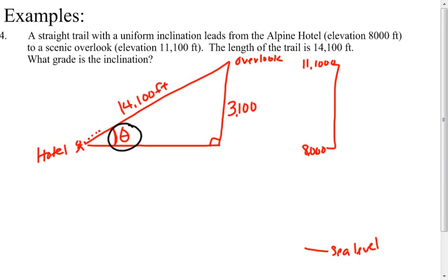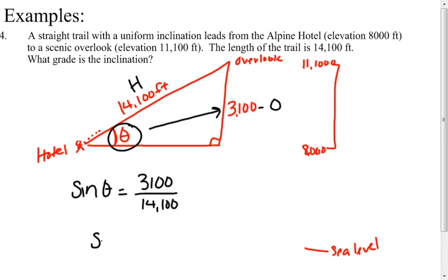You're missing the angle and need to pick two sides you already know. From this angle, 3,100 feet is opposite and 14,100 feet is the hypotenuse — O and H means sine. Sine of the angle equals opposite over hypotenuse, so you use inverse sine of 3,100 over 14,100 on your calculator. The angle of elevation comes out to be about 12.7 degrees.